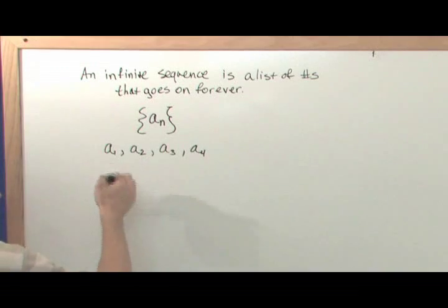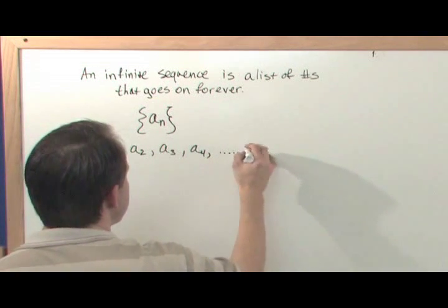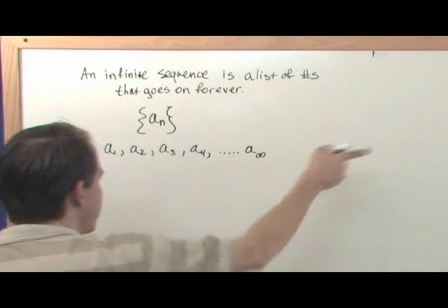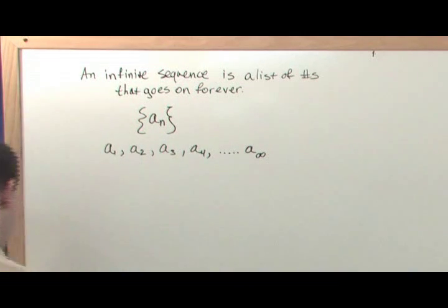Hi and welcome to this section on sequences. A sequence is just numbers separated by commas and it would go on forever to a sub infinity. It would go on to a sub 1 million or whatever. So some examples of sequences would be things like this.